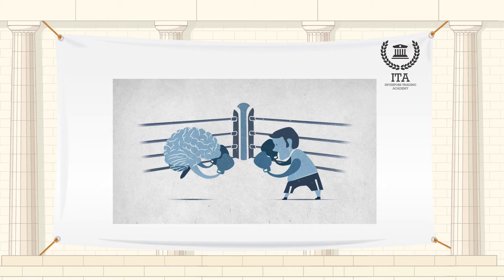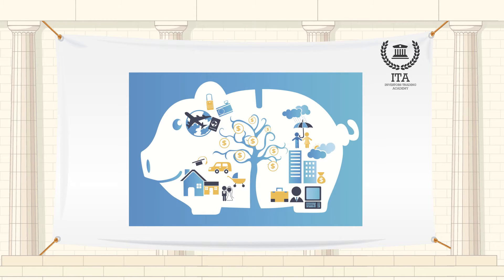Behaviorists try to augment or replace traditional ideas of economic rationality with decision-making models borrowed from psychology. According to psychologists, people are disproportionately influenced by a fear of feeling regret and will often forgo benefits even to avoid only a small risk of feeling that they have failed.